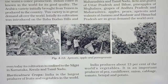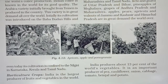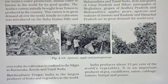Hello students. In this video we are going to continue with Chapter 4 Agriculture. In the last videos we discussed the types of farming: primitive subsistence farming, intensive subsistence farming, commercial farming, and the cropping pattern — rabi, kharif, and zaid — and major crops including rice, wheat, millets, pulses, tea, coffee, sugarcane, oilseeds, and cotton. Now we are going to continue with horticulture.